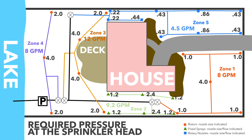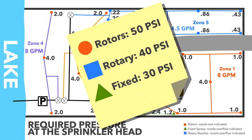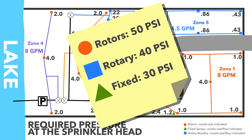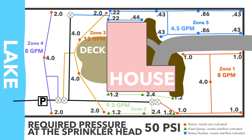The required pressure at the sprinkler head is based on sprinkler type. The rotors in zones 1, 3, and 4 require 50 PSI; the rotary nozzles in zone 5 require 40 PSI; and the fixed sprays in zone 2 require 30 PSI. To ensure the system can handle all three types, we select 50 PSI as the required pressure for the system.